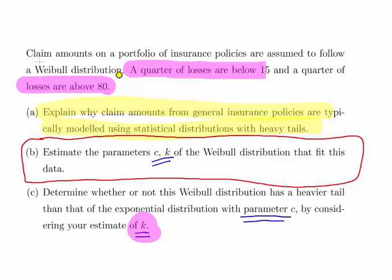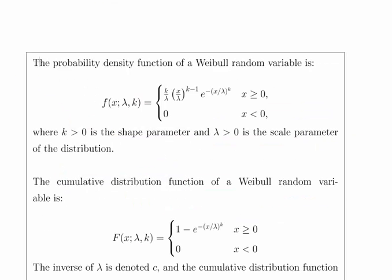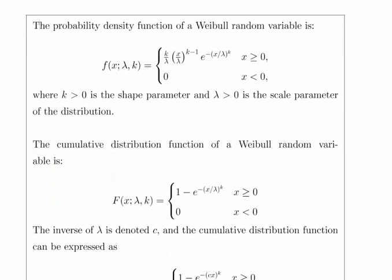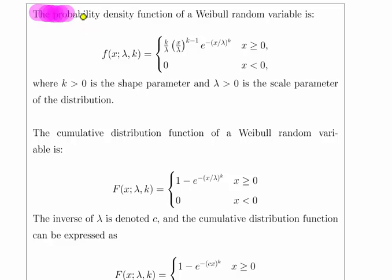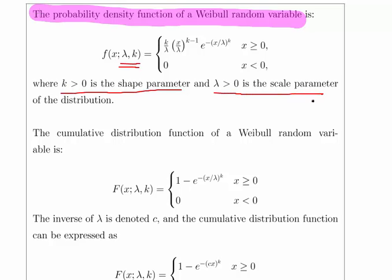Now that question will be more focused towards engineering students, where it becomes more relevant, particularly in the context of reliability theory. Now let's look at the Weibull distribution here. This is the PDF of the Weibull distribution. You notice that it is denominated in terms of lambda and K, where K is the shape parameter and lambda is the scale parameter of the distribution.